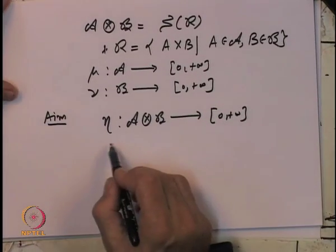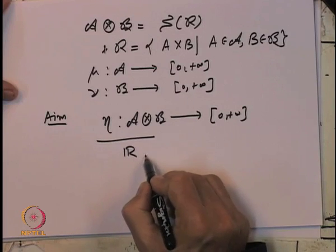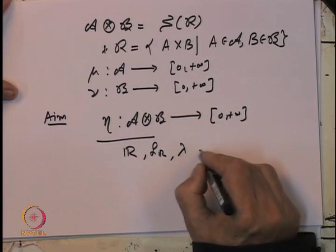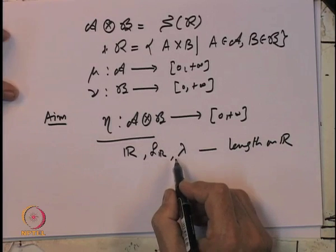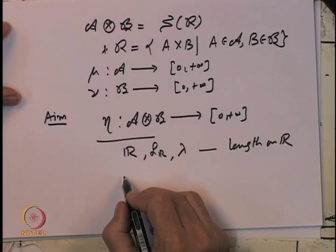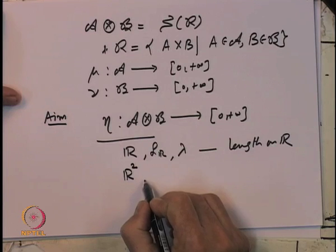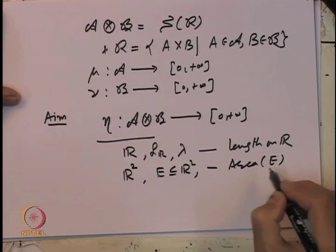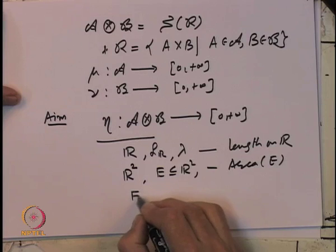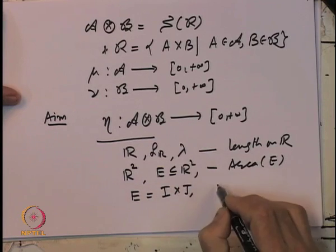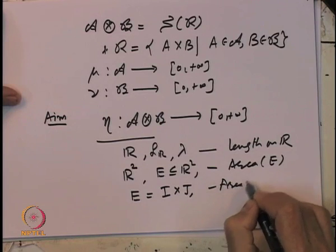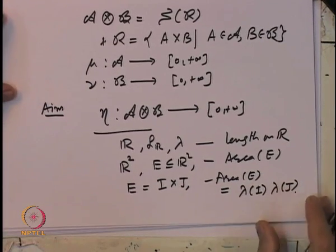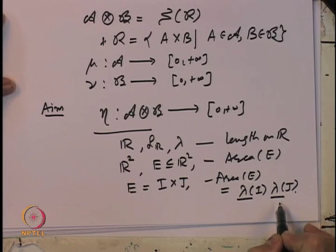Why are such things important? Let us recall that on the real line and the Lebesgue measurable sets, we had defined the notion of Lebesgue measure, which extended the notion of length to subsets of ℝ which are not necessarily intervals. We would want to do the corresponding thing on ℝ². On ℝ², given a set E, we would like to define the notion of area of E. If E looks like a rectangle I×J, then its area is defined as length of I times length of J. This motivates the notion of the product.